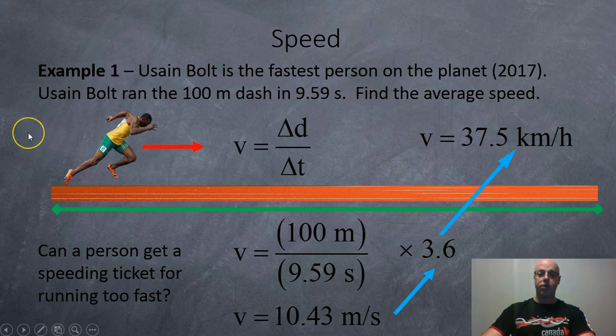Okay. So, here's a few examples. Example 1. Person, Usain Bolt. Fastest person on the planet in 2017. Mr. Bolt ran the 100 meter dash in 9.59 seconds. Find his speed. So, we're going to fill in the formula. So, here's the formula, here's the picture. 100 meters divided by 9.59 seconds. Mr. Bolt averaging 10.43 meters per second.